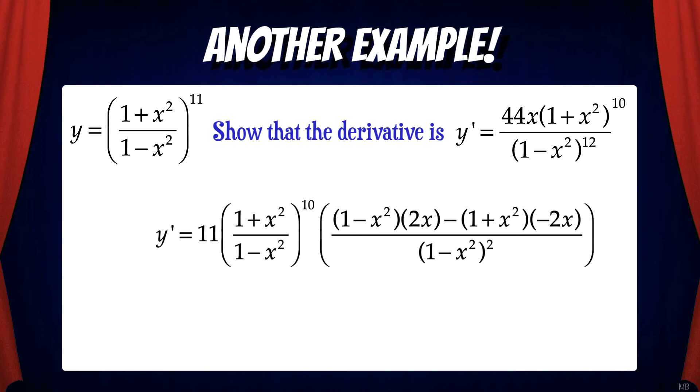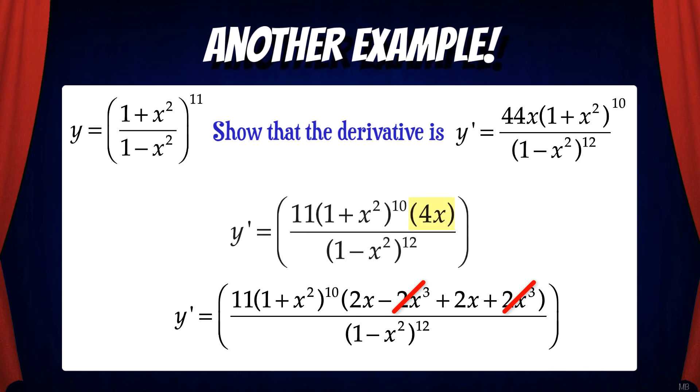However, it's not in the final form that we want. So we need to use some algebra here. By expanding and simplifying, we see that the 2x cubed terms cancel out. That leaves us with 4x. So the derivative is now 11 times the quantity of 1 plus x squared to the 10th times 4x divided by the quantity of 1 minus x squared to the 12th. This is getting closer to the form that we want.